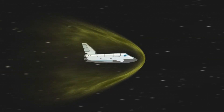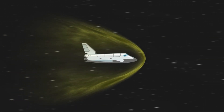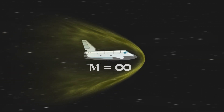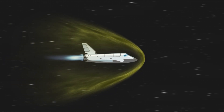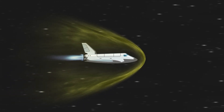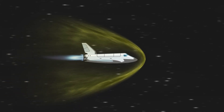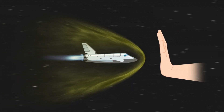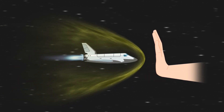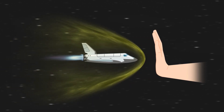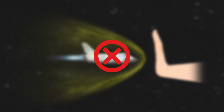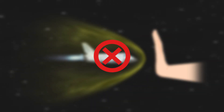At the speed of light, an object's relativistic mass would theoretically become infinite, which would require an infinite amount of energy to propel it further. This poses a fundamental limitation to accelerating objects to or beyond the speed of light, so it's considered impossible to either increase the speed of light in vacuum or travel faster than light.